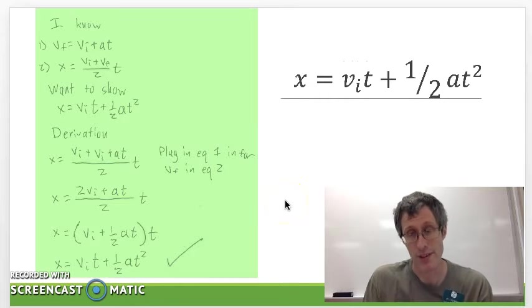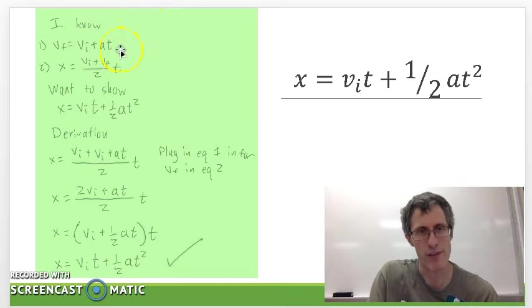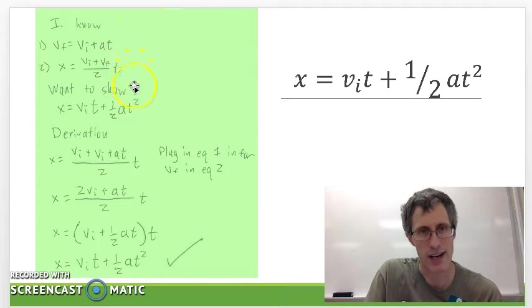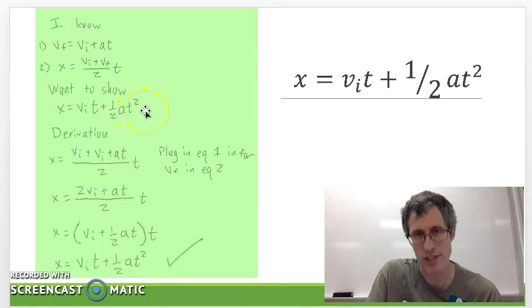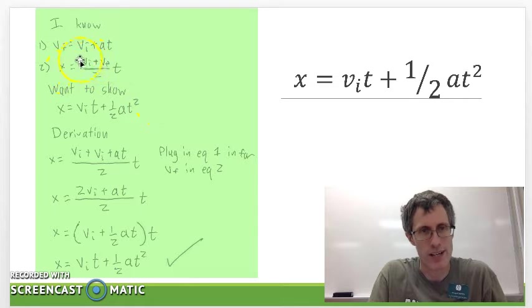Now for the third equation of motion. So this one can be derived algebraically from the first two. So if I know those first two are correct I want to show this third equation of motion is also true. What I can do is I can take this equation right here and for where it says vf right here I can plug in vi plus a t because I know that's the same thing as vf.